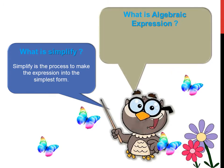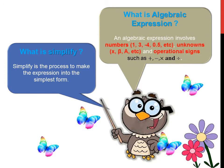What is an algebraic expression? An algebraic expression involves numbers — such as 1, 3, minus 4, 0.5, etc. — unknowns, such as x, beta, a, etc., and operational signs such as plus, minus, and times.